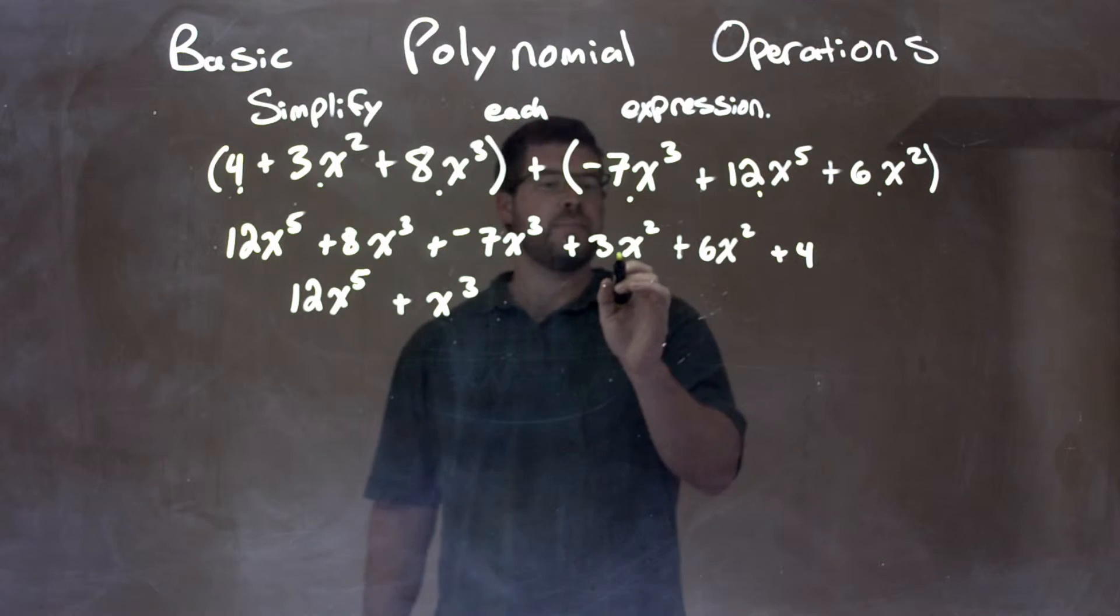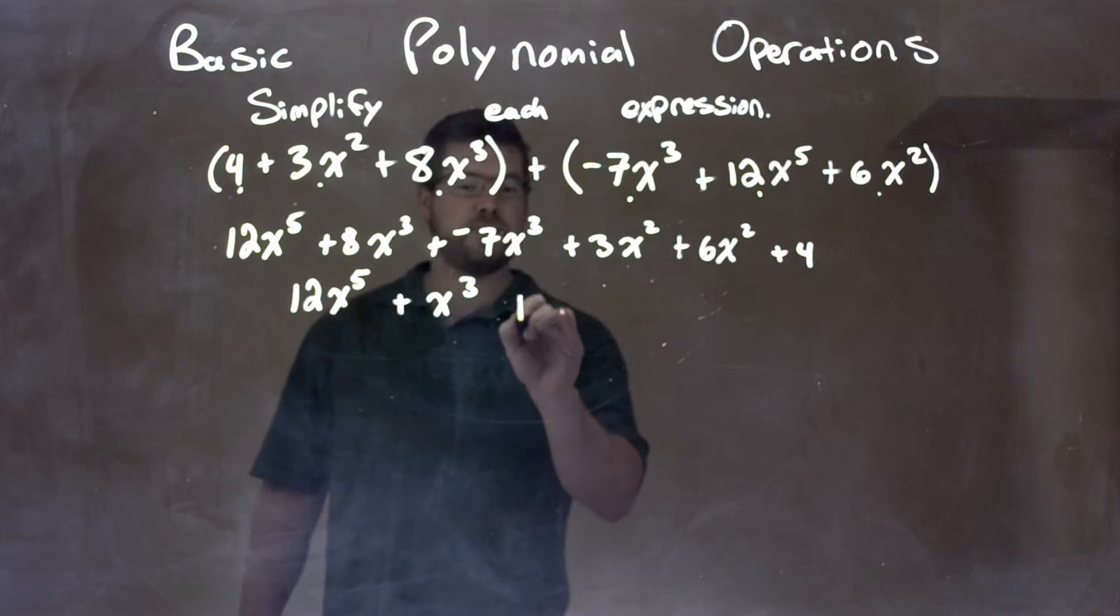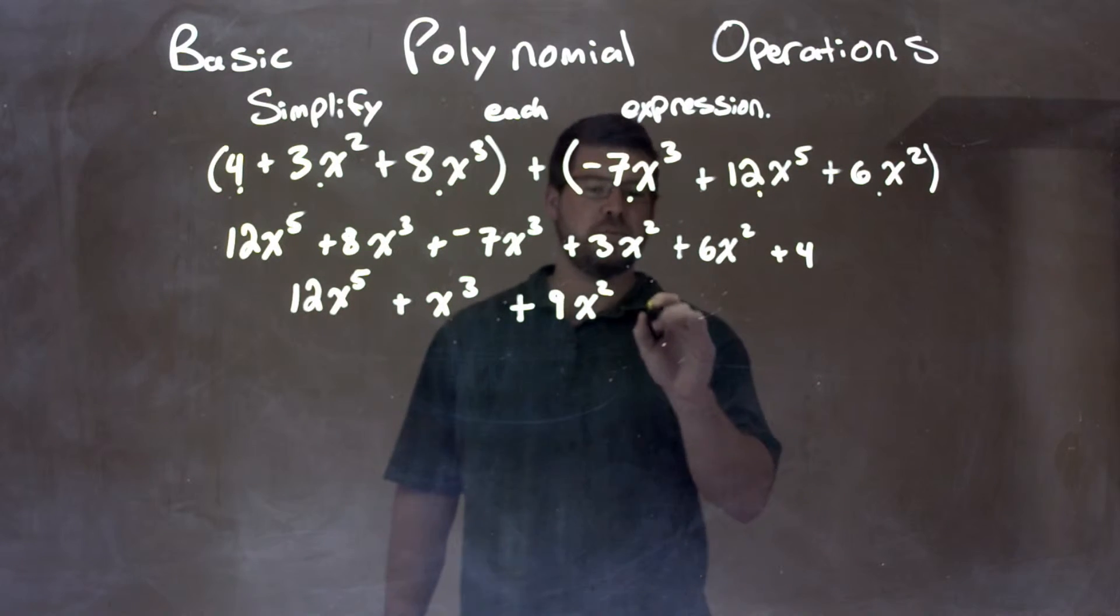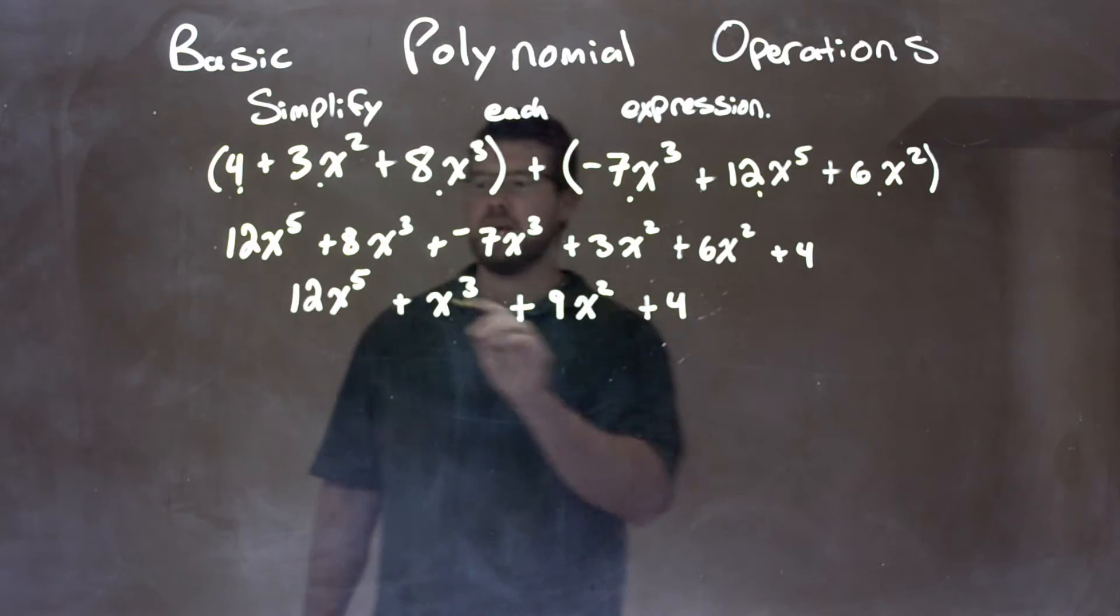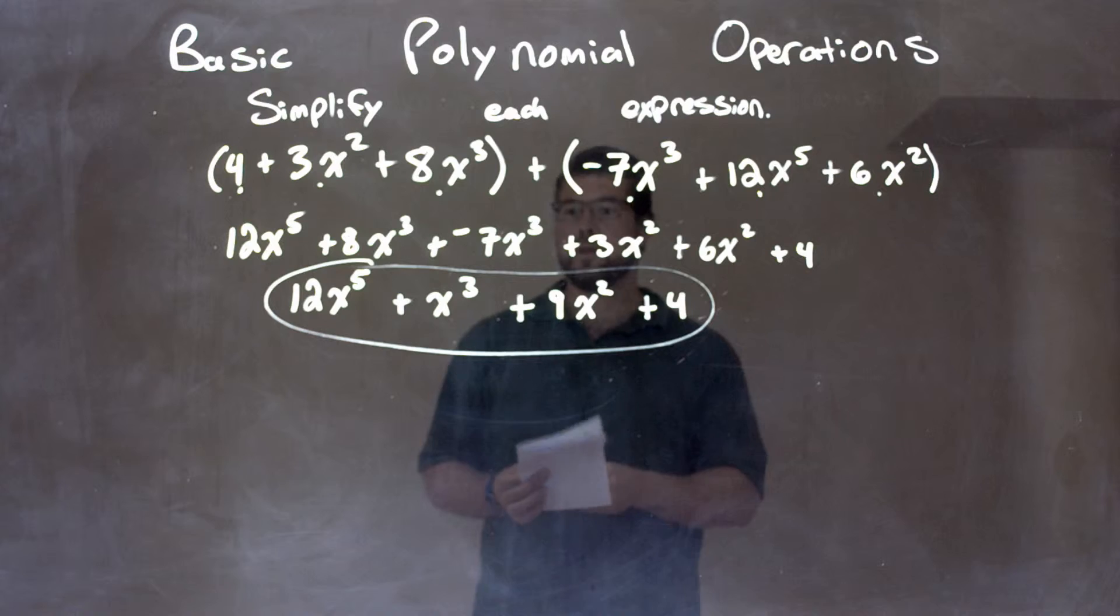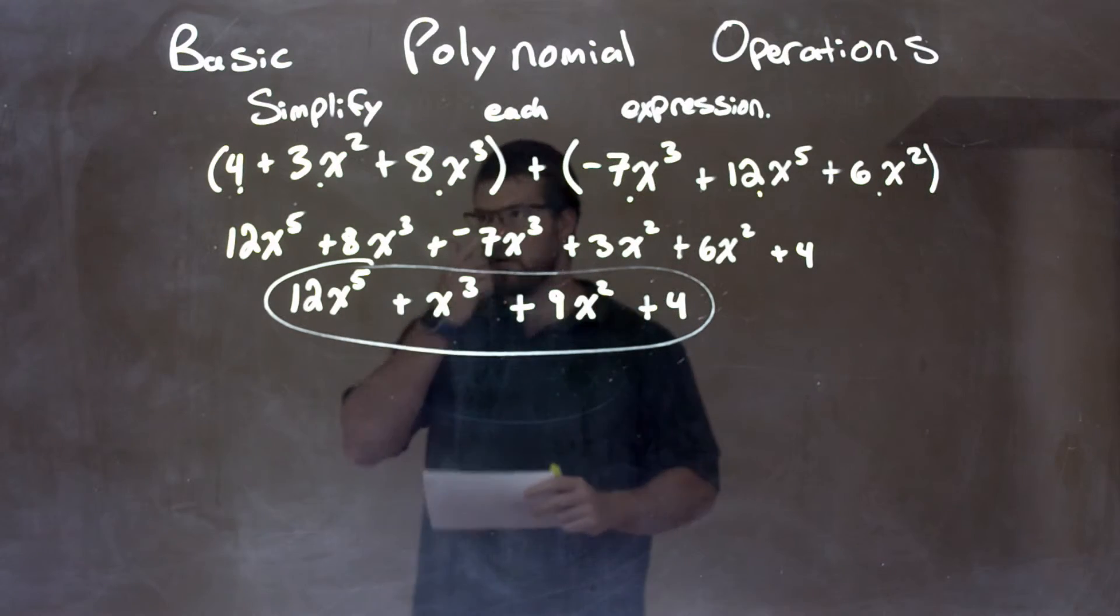Now we deal with the squareds. 3x squared plus 6x squared is 9x squared. Got that? And then we just bring another plus 4 by itself, and there we have our final answer: 12x to the fifth plus x to the third plus 9x squared plus 4. All right?